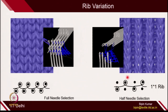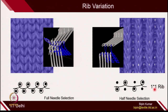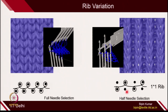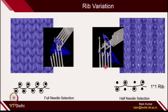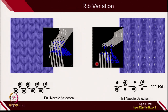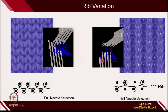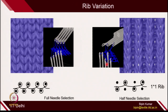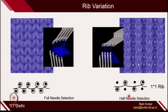The other rib is 1×1 rib. As the name suggests, on each of the beds only one needle is active and the other needle is not active. If you see the animation, on each of the beds only alternating needles are operating. The rest of the needles are just sitting idle — they are not part of loop formation. This is called 1×1 rib.